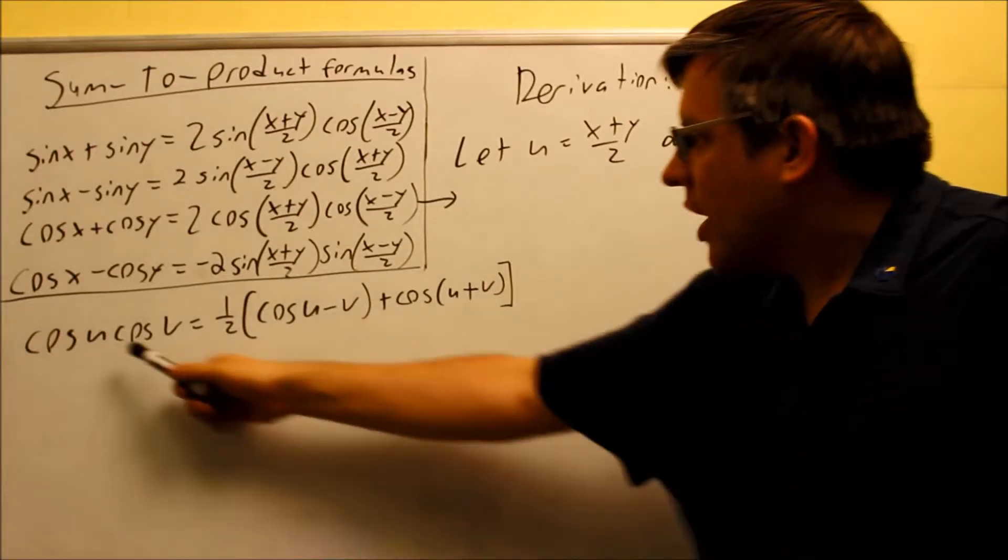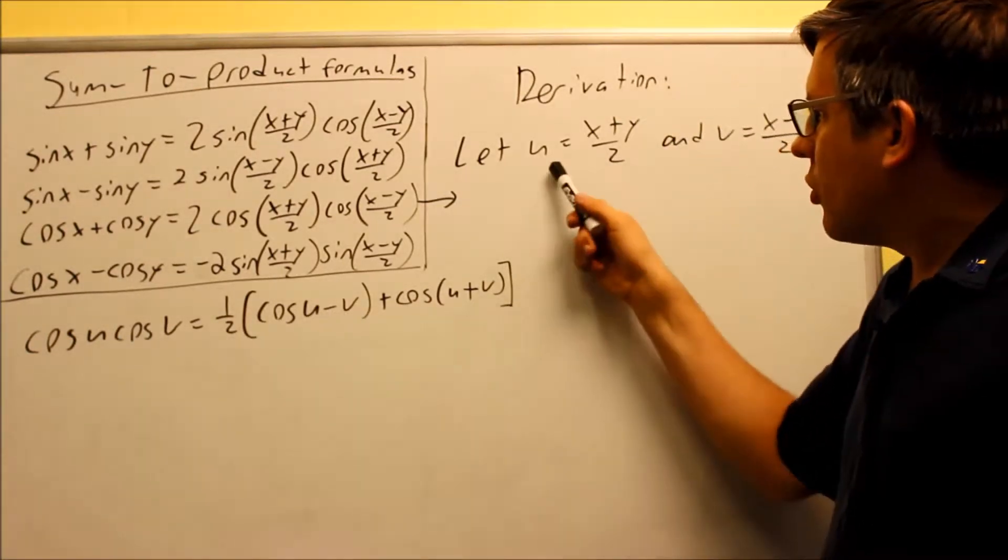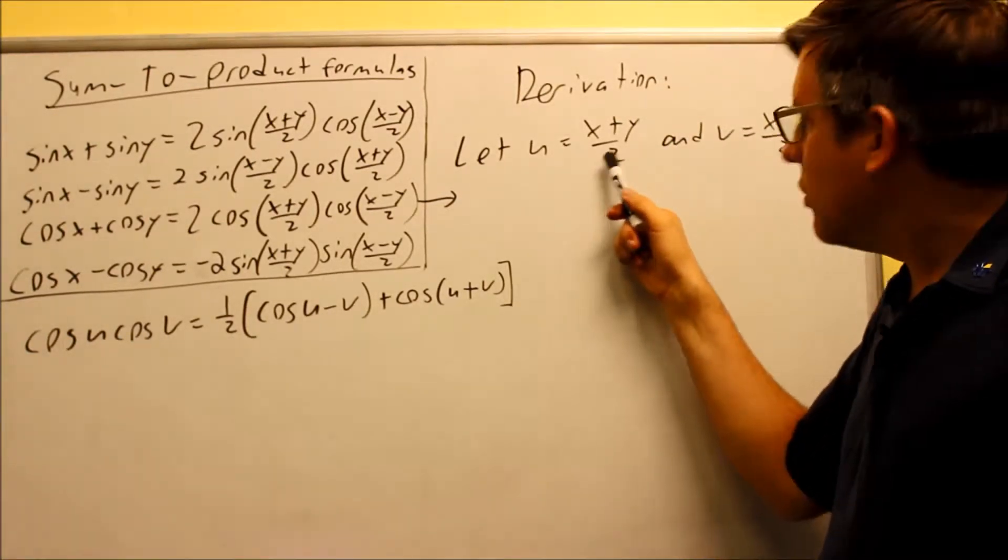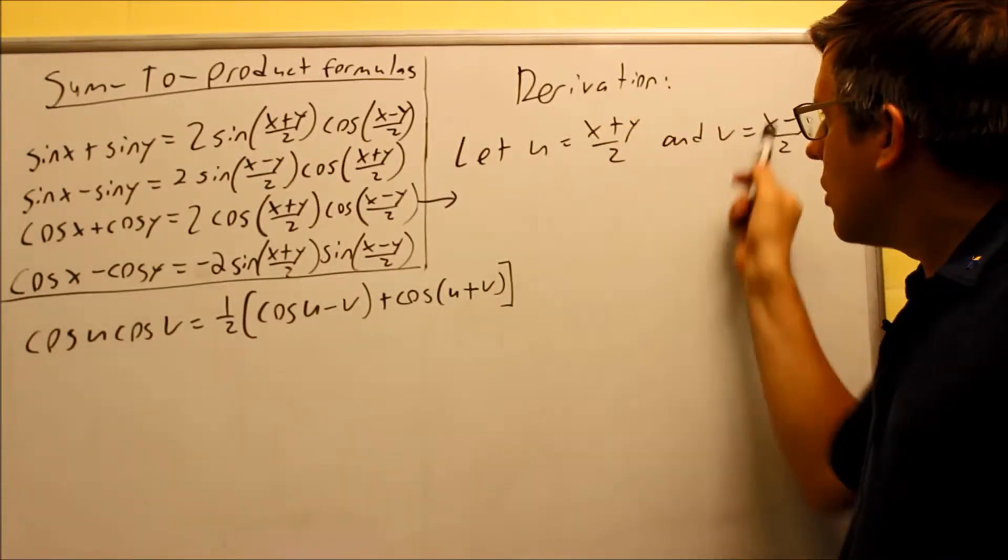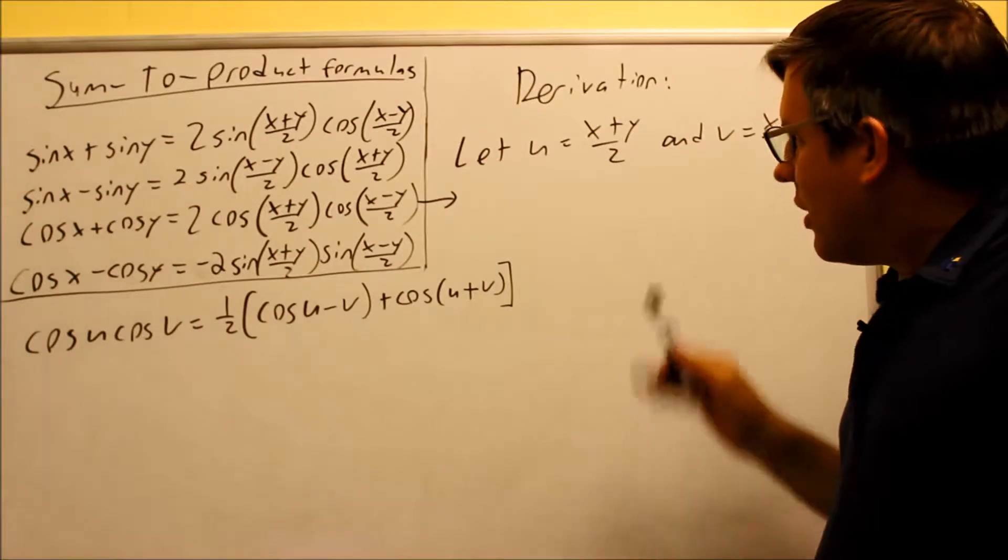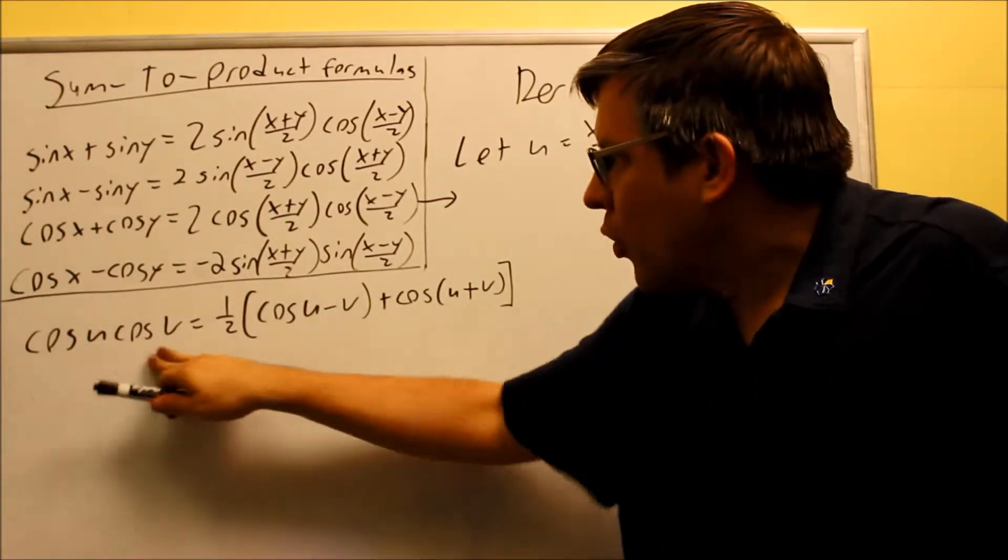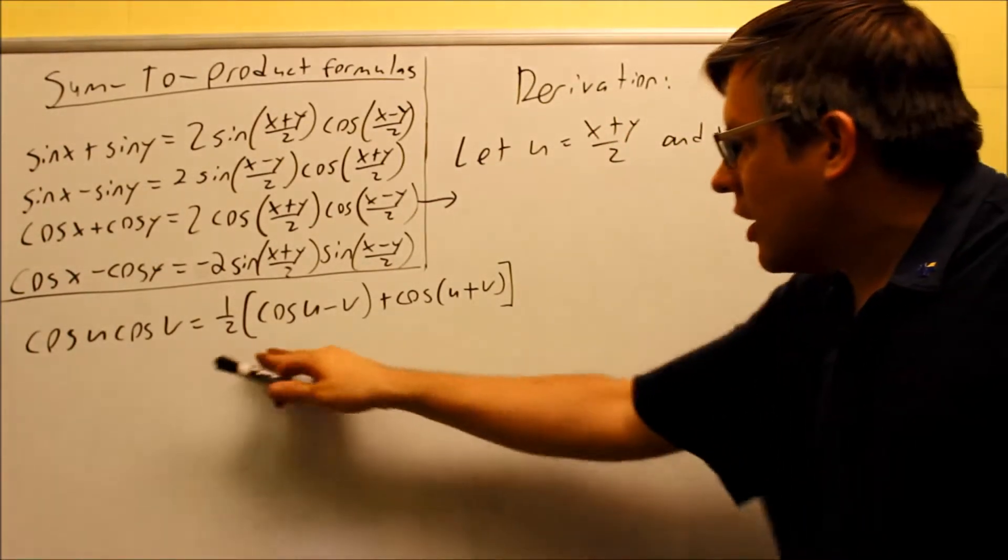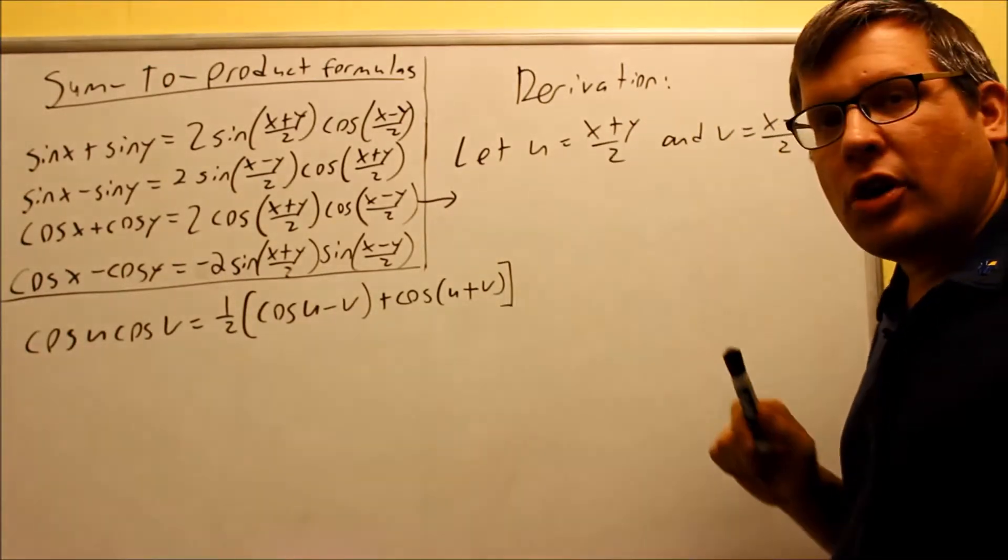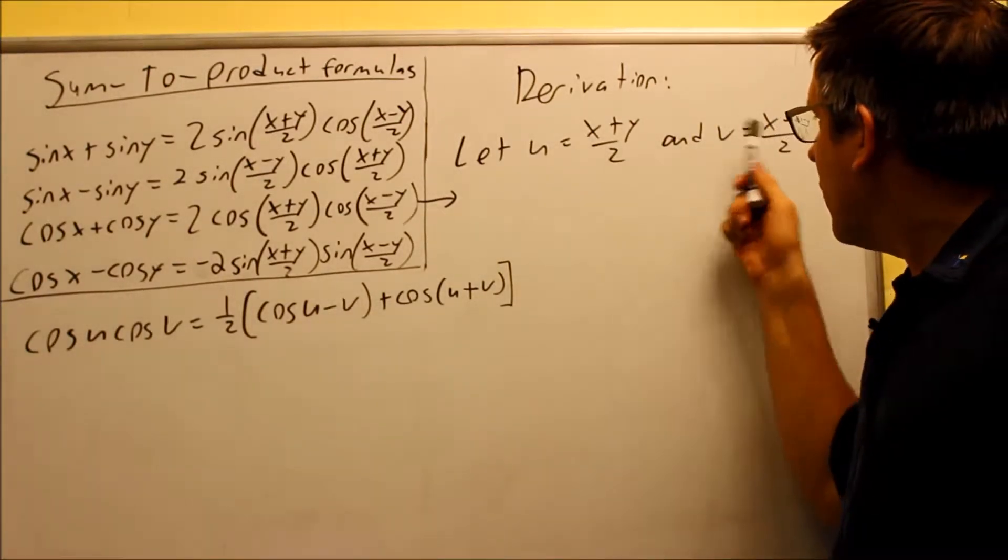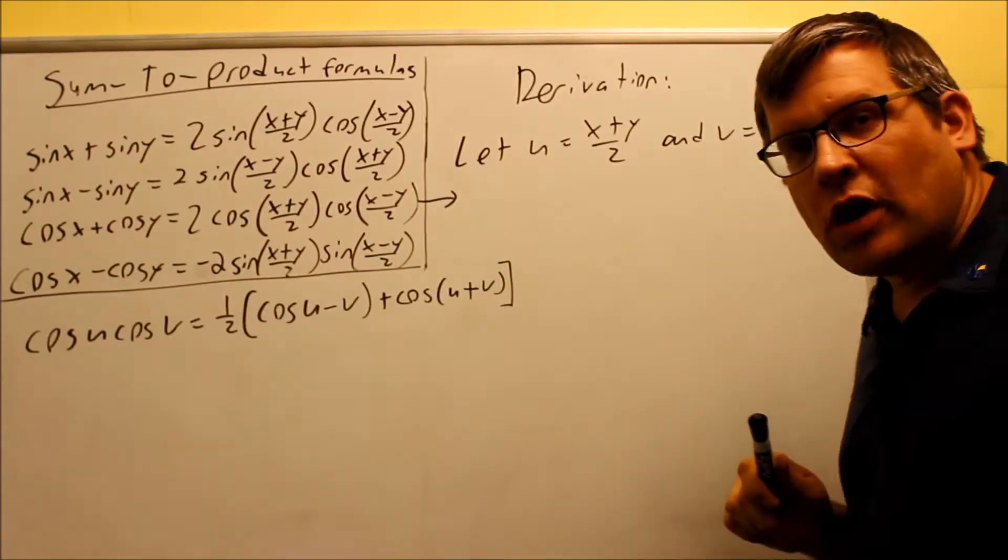So in order to do this, I change these into u's and v's, and I'm going to let u equal x plus y over 2, and v is going to equal x minus y over 2. So everywhere I see a u, I'll put x plus y over 2. Every v I find, I'll put x minus y over 2.